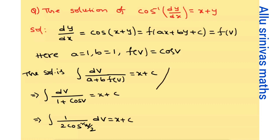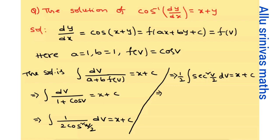The denominator has two terms, so we rationalize. Using the identity, 1 by 2 times sec squared (v/2) gives: the integral of sec squared (v/2) times (1/2) dv equals x plus c. Since the integral of sec squared x is tan x, with coefficient 1/2: tan(v/2) divided by (1/2) times (1/2) equals x plus c. The two factors of 1/2 cancel.